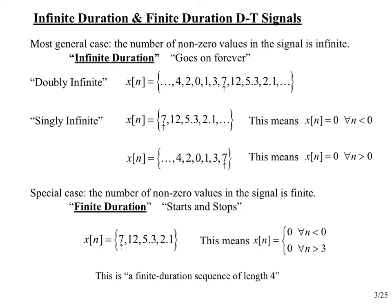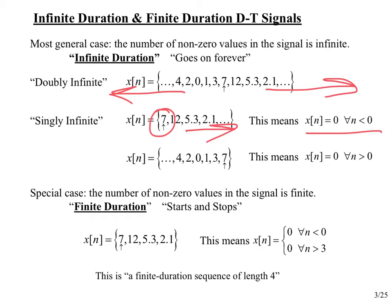A doubly infinite sequence goes on forever in both directions. A singly infinite sequence starts at some point — often shown at time zero — and no dots to the left indicate the signal was zero prior to that point, then goes on forever in the positive direction. Likewise, a signal can go on forever in the negative direction, and no dots after a certain point indicate it is assumed to be zero after that. The start and stop do not have to be at time zero.